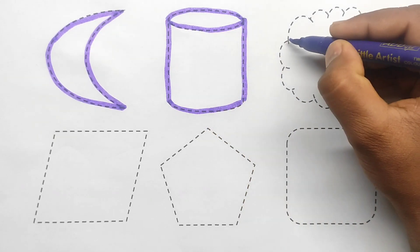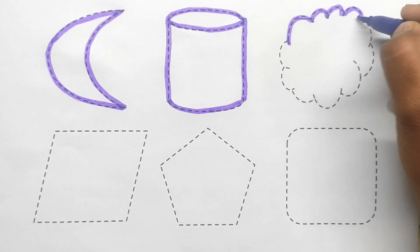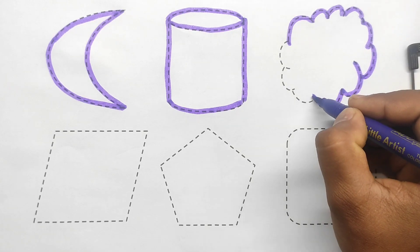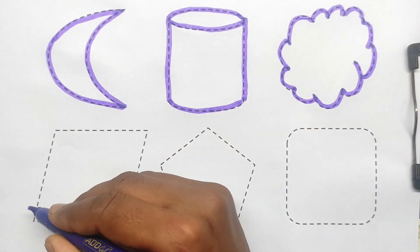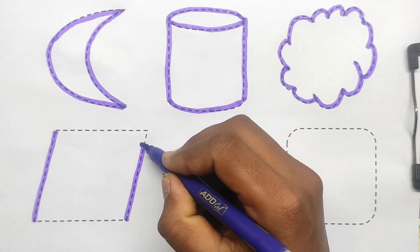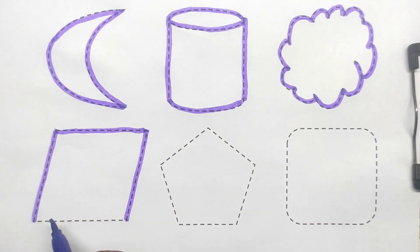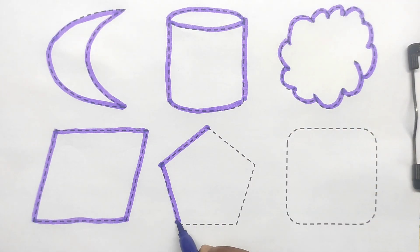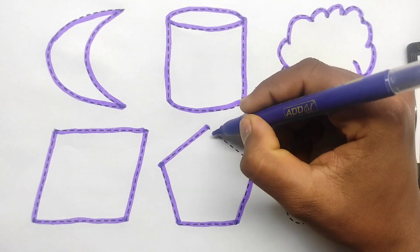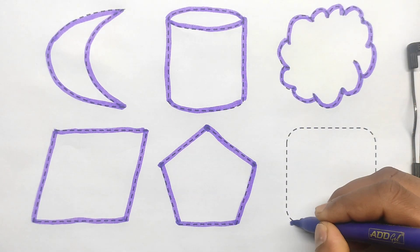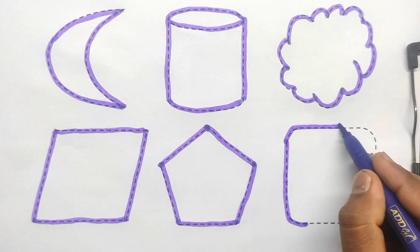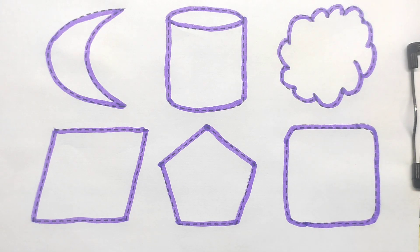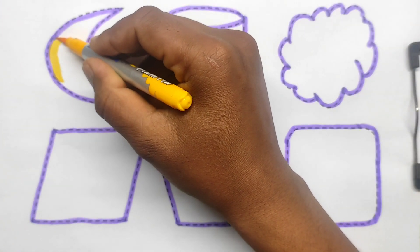Cylindrical. Cloud. Quadrilateral, pentagon. Rounded square, yellow color.